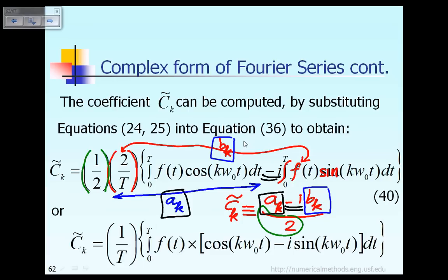Looking at equation 40, the function f(t) can be factored out because it appears in both integrals. Once f(t) is factored out, what remains inside the integral is cosine(Kω₀t) minus i·sine(Kω₀t), as seen in equation 40. The constant C̃_k in the Fourier series expressed in exponential form is given by this equation 40.